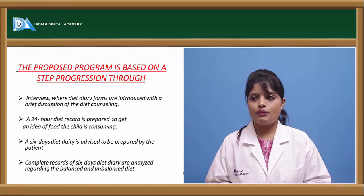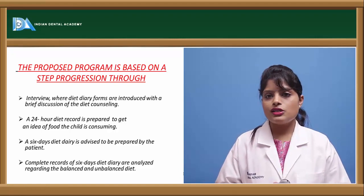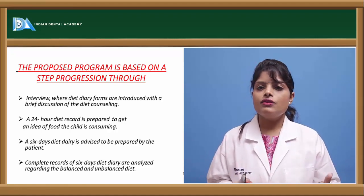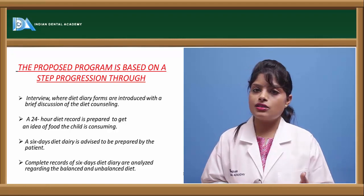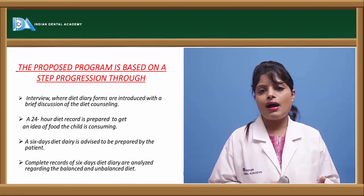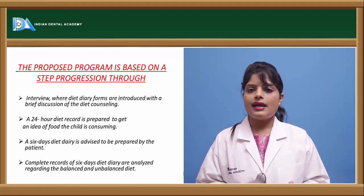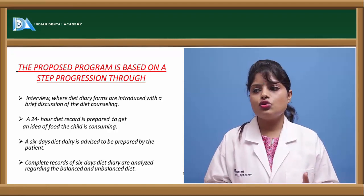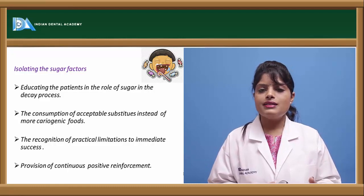The proposed diet counseling program involves several steps. The first step is interviewing the patient — recording the name, age, daily habits, hobbies, preferences, likes, socio-economic level, and occupation. Then comes recording food habits. A 24-hour diet diary has to be maintained by the patient coming for diet counseling. After the 24-hour diary, a six-day diary needs to be maintained, with a complete record of what food is eaten, what is not eaten, and how much is eaten.